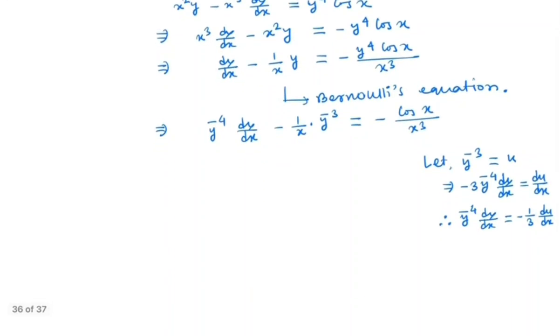So we have minus 1 by 3 du/dx minus u by x is equal to minus cos x by x cubed. Simplifying this we get du/dx plus 3u by x is equal to cos x by x cubed.